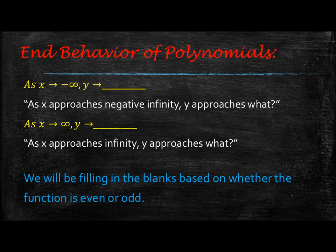For this first piece written in yellow, it says: as x is approaching — that arrow just means 'approaches' — as x approaches negative infinity, y approaches what? And so if we look at a graph and look at the negative infinity side...